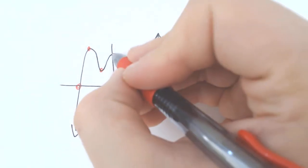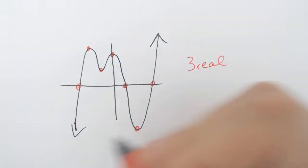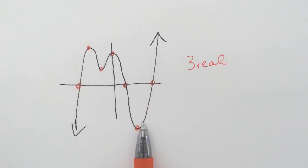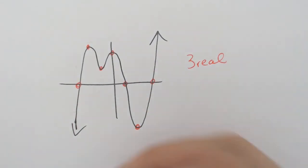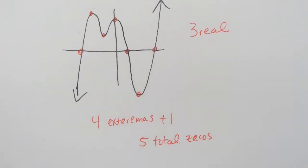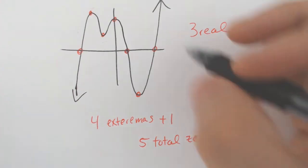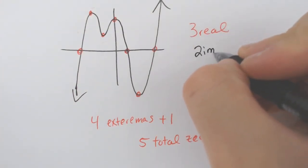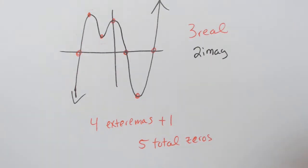So we can use our min-max trick. One, two, three, four. I got one, two, three, four relative extremas. Because we have four extremas, if you add one to that, you should have five total zeros. So if I have five total zeros and I already have three real, well, that must mean that I have two imaginary zeros as well to make it total to five.